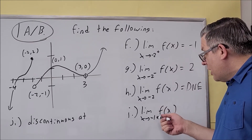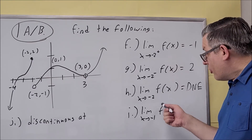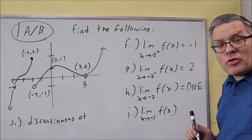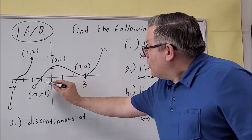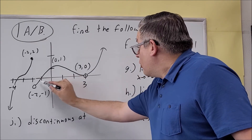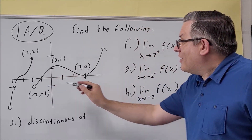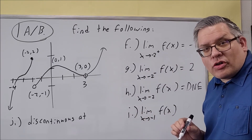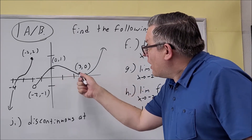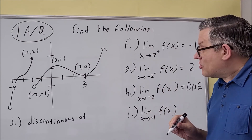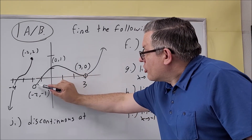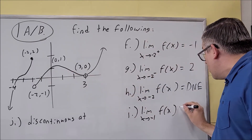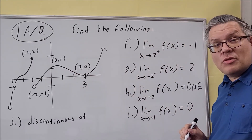For part i, the limit as x approaches negative one: check whether the left and right limits approach the same value. At negative one, there's no open or closed circle — that's okay, you don't need one for a limit to exist. You only need the y-value to approach the same number from both sides. From both the left and the right, the y-value approaches zero, so the answer is zero.